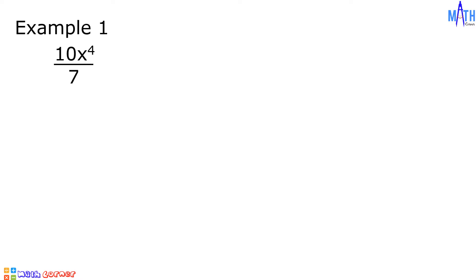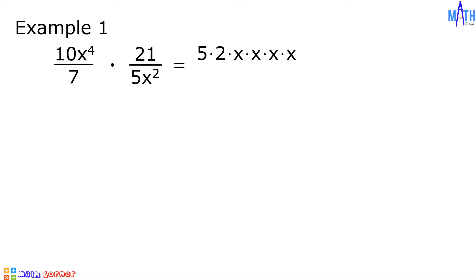Example number one: 10x raised to 4 over 7, multiplied by 21 over 5x squared. Step number one, let us factor the numerators and the denominators. 10x raised to 4 is equal to 5 times 2 times x times x times x times x, over 7, multiplied by 21 is equal to 7 times 3.